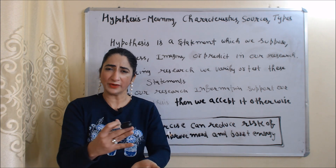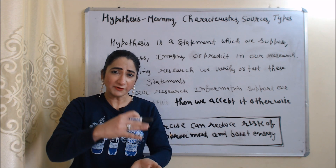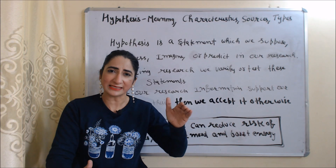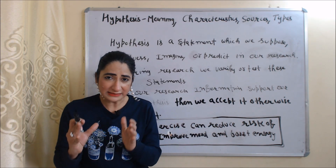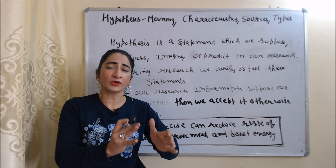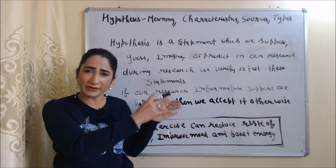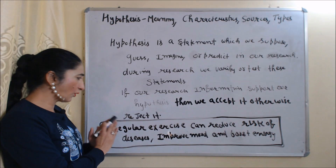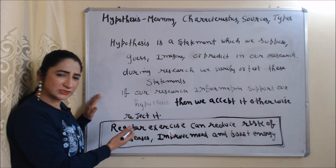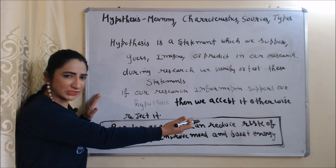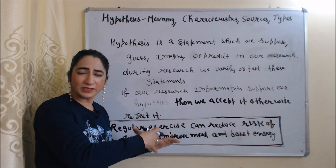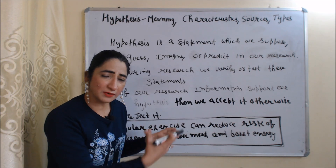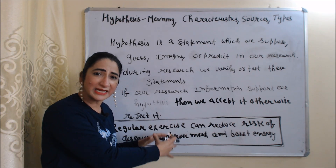During our research, we verify or test these statements. If our research data or information supports or is in favor of our hypothesis, then we accept it; otherwise, we reject it. For example, I suppose regular exercise can reduce risk of diseases, improve mood, and boost energy. This is my hypothesis — during my research I verify or test it, and accept or reject it accordingly.